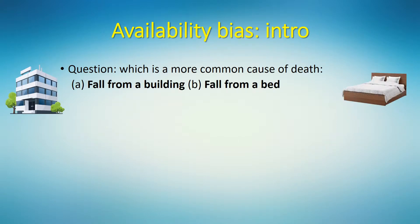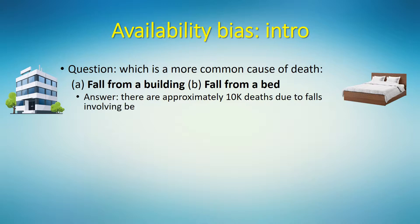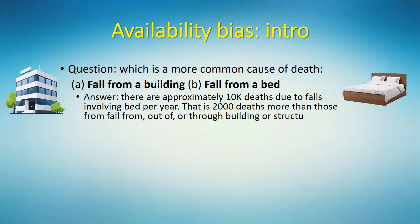What a stupid question, you might say. Of course fall from a building is more common. And that would be a wrong answer. According to the official statistics from the US, provided by the Center for Disease Control and Prevention, as of the year 2016, there are approximately 10,000 deaths due to falls involving a bed per year. That is 2,000 deaths more than those from falls from, out of, or through a building or structure.